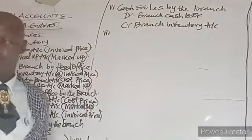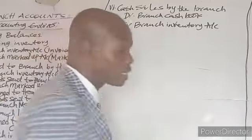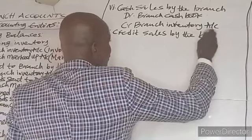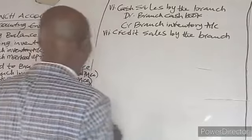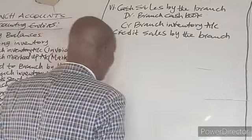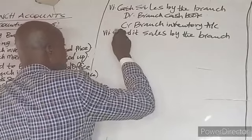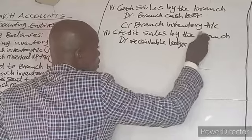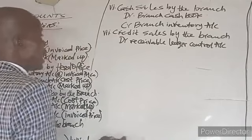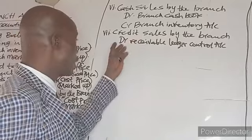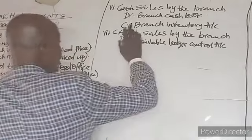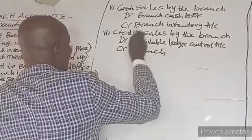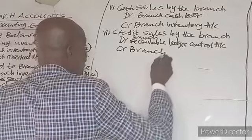Entry number seven: credit sales by the branch. For credit sales, the customer is the receiver of the goods, so you debit the branch receivable ledger control account — receivable being an asset, an increase is debited. Inventory reduces when goods are sold, so you credit the branch inventory account with the selling price of the item.